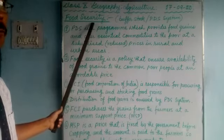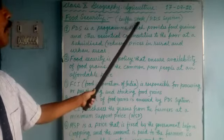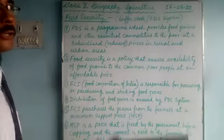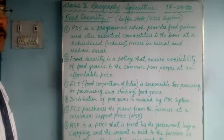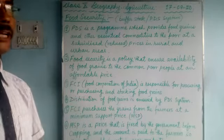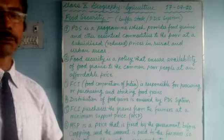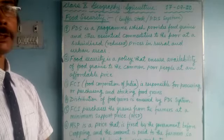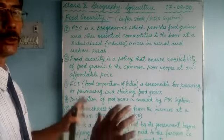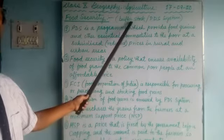In our previous class, we talked about food security. We learned the two components of food security: buffer stock and the PDS system. Buffer stock means the government has to store some food grains. Surplus food grains are stored, some are exported, and after storing, when the granaries are full, the government will export the food grains. Buffer stock means the stock has to be maintained so that it can last for another year.